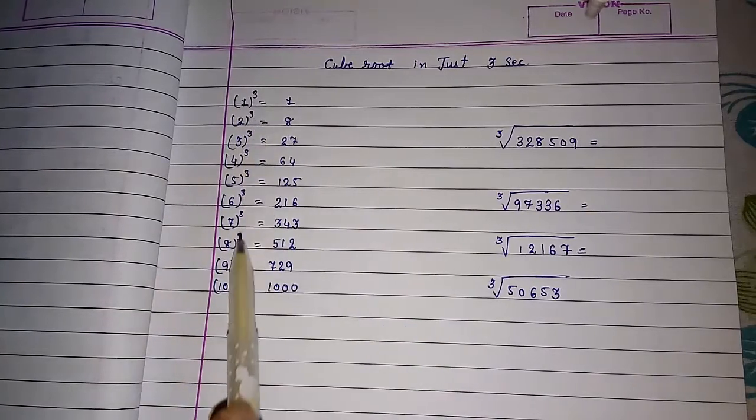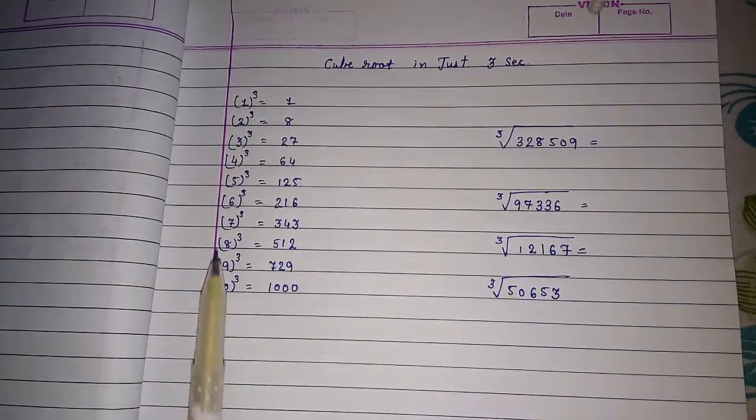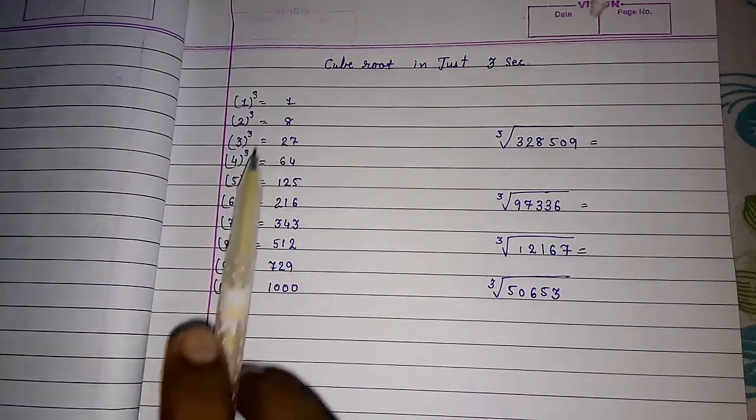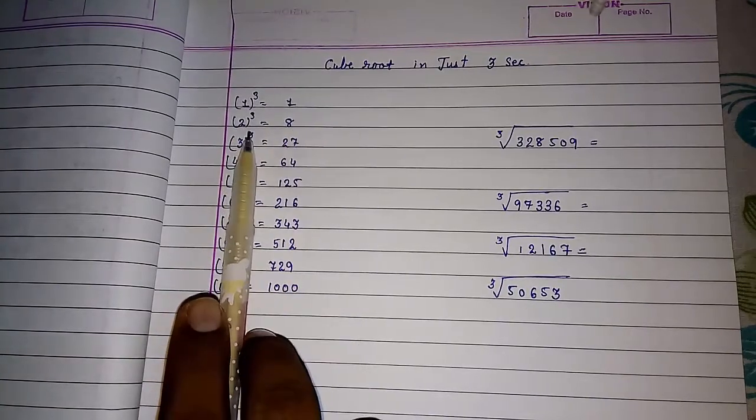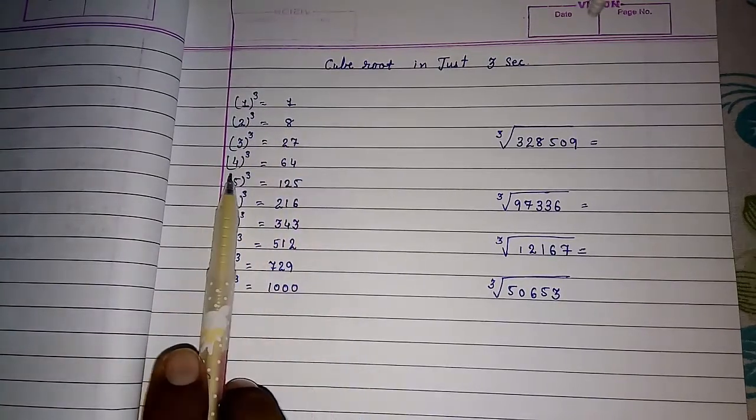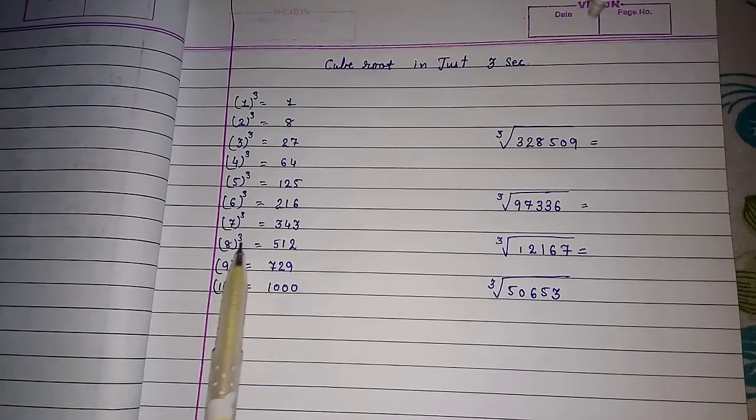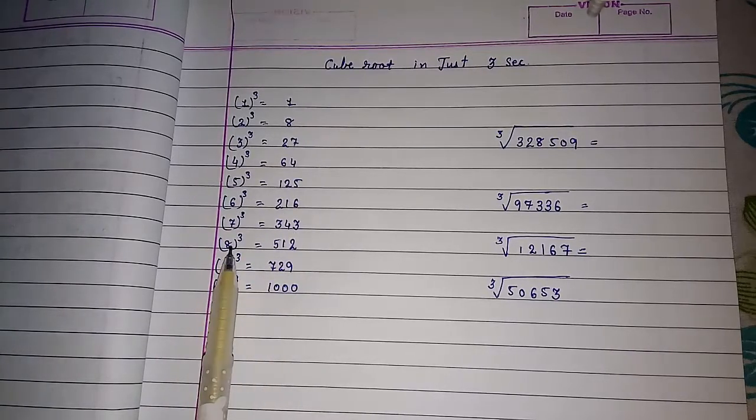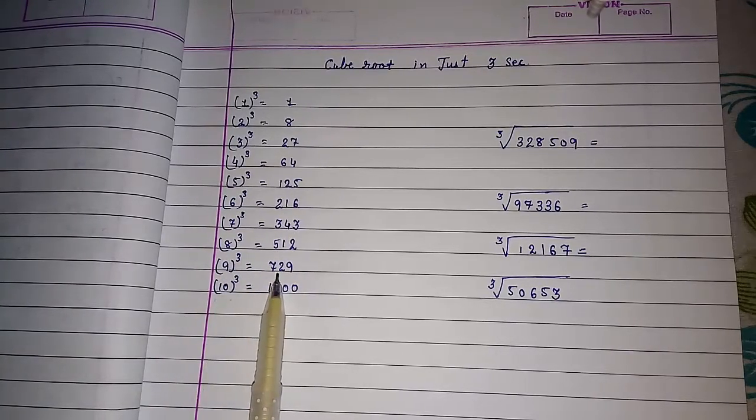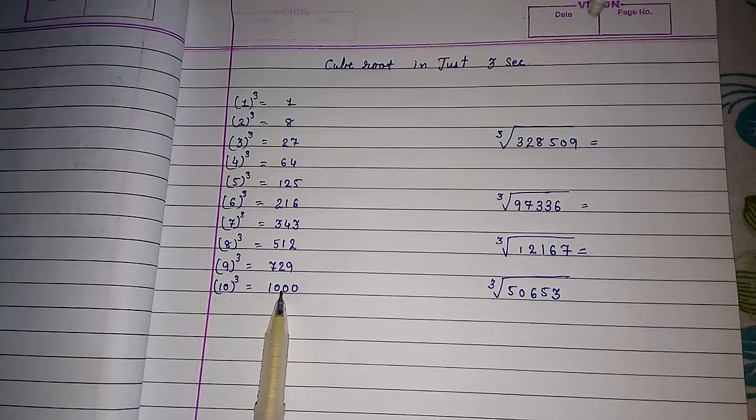Before starting this, you should know the cube or you should learn the cube from 1 to 10. Look here. 1 cube 1, 2 cube 8, 3 cube 27, 4 cube 64, 5 cube 125, 6 cube 216, 7 cube 343, 8 cube 512, 9 cube 729, and 10 cube 1000.